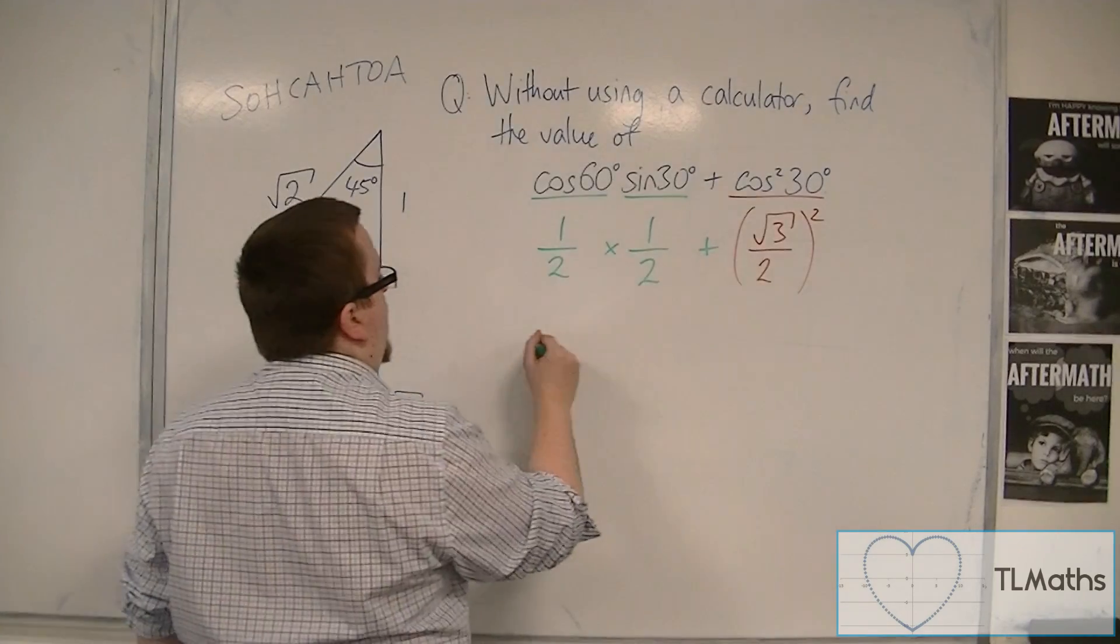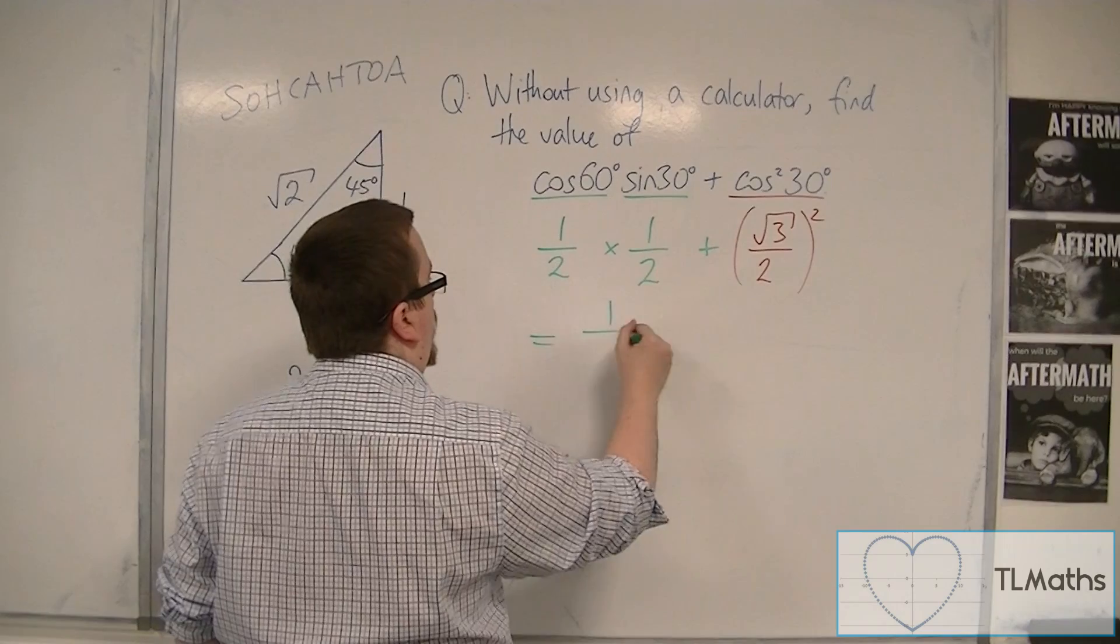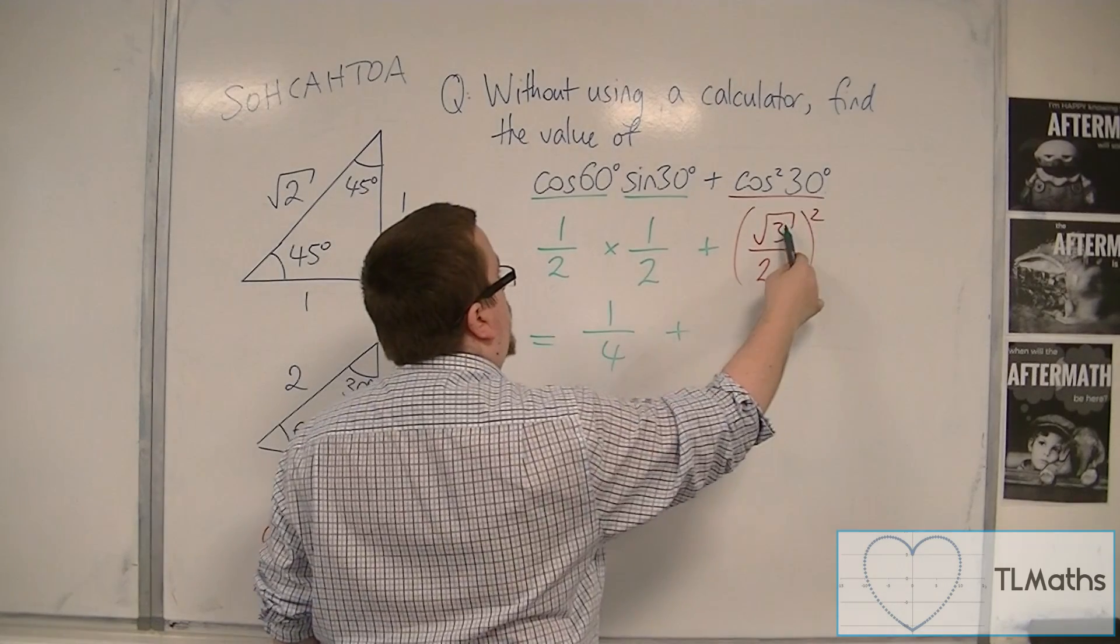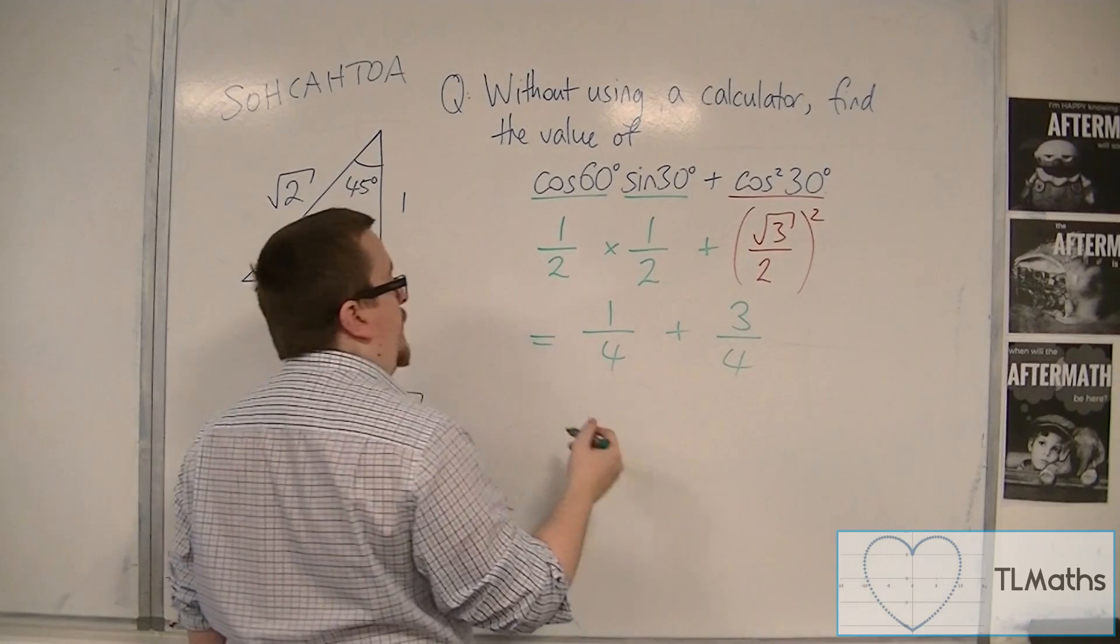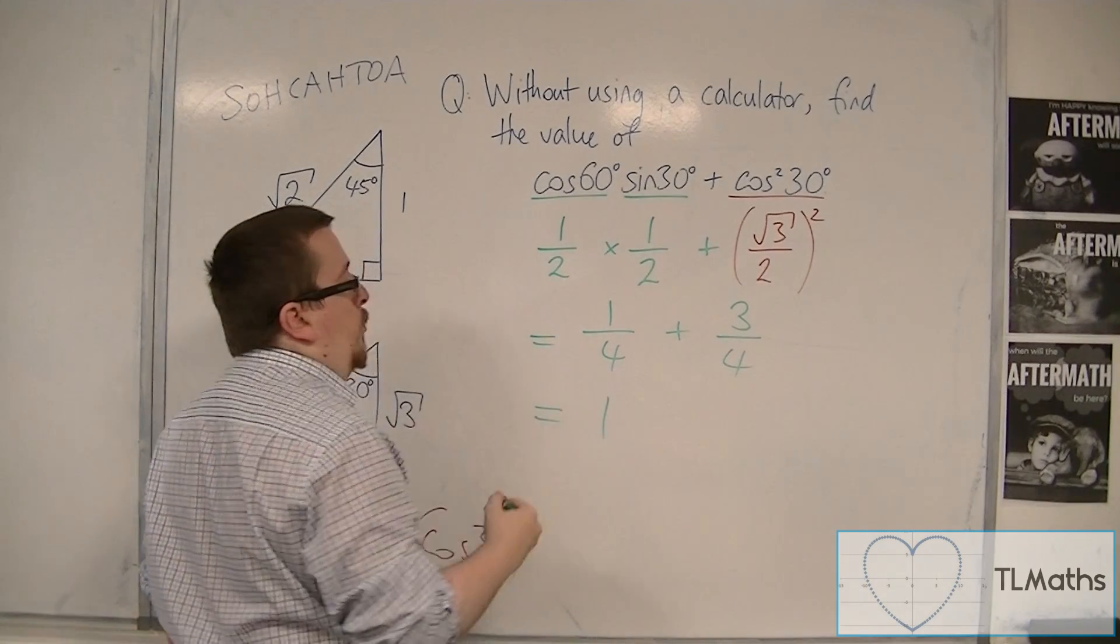So we get a half times a half, that's a quarter, plus root 3 squared is 3 over 2 squared, which is 4, so a quarter plus 3 quarters is 1.